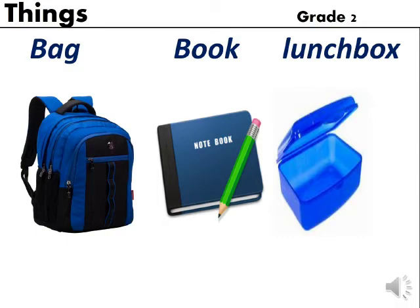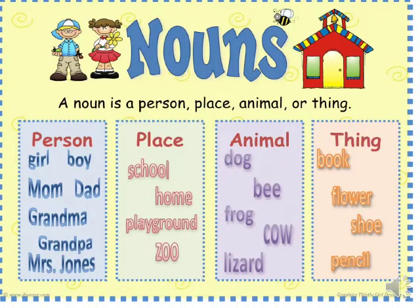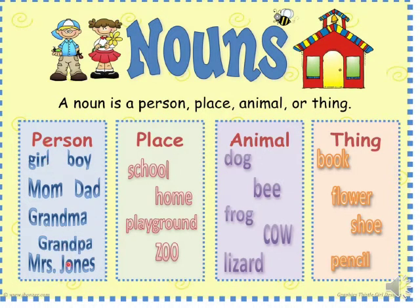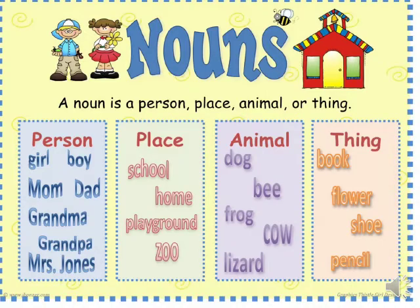These are the names of things and they are nouns. So what did we learn? We learned that nouns refer to the name of a person, place, animal and thing. Here are some other examples: mom, dad, grandpa, school, zoo, bee, frog, book, shoe, pencil, etc.